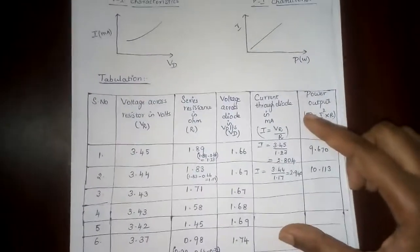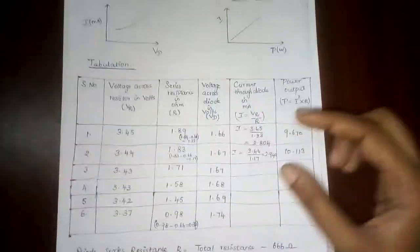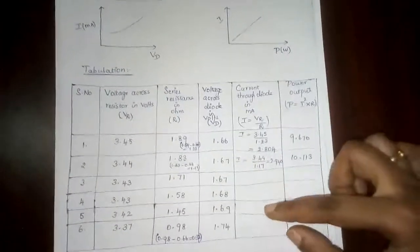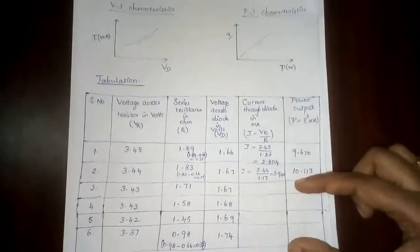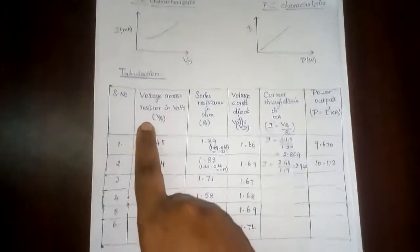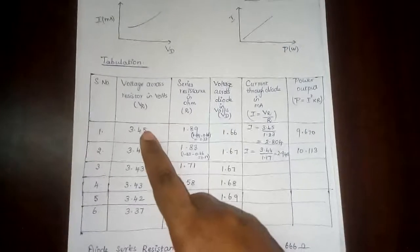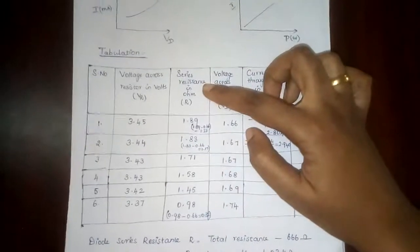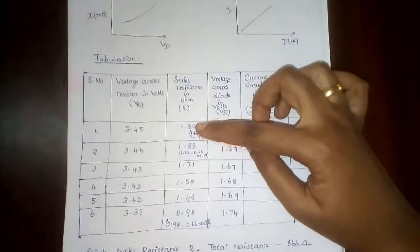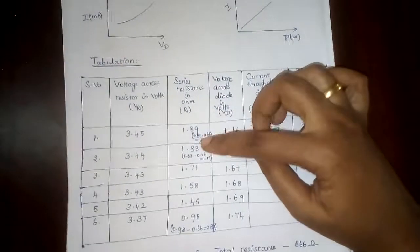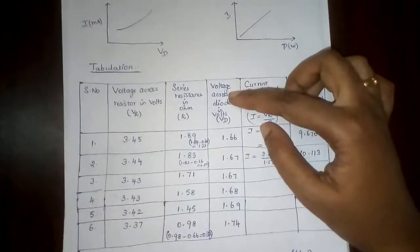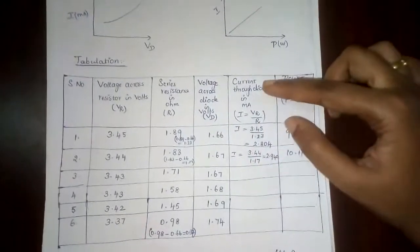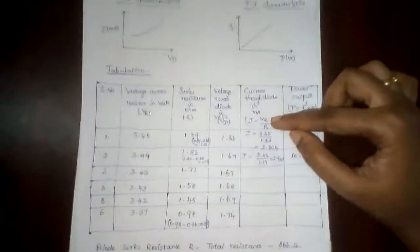Now we are going to take the values to the table. The first two values — we are going to find how to record them. For the last four values, we are going to find the current and power. We are going to find the values. First, we call the voltage across the resistor — P1 and P3 — going to record the values.